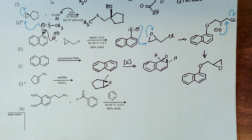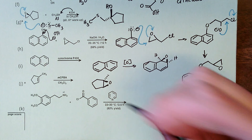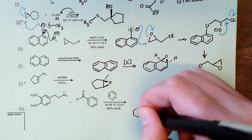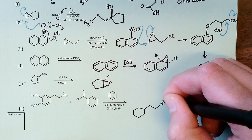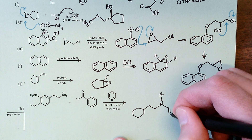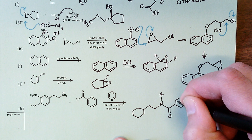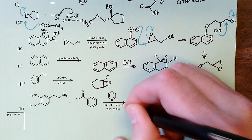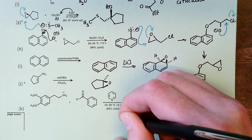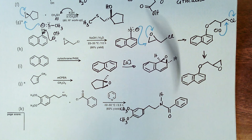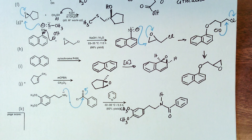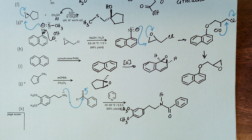Part k: a primary amine plus an acid chloride generates the amide in 82% yield. In the mechanism: the nitrogen atom attacks the electrophilic carbonyl to form a tetrahedral intermediate; a proton transfer event occurs; collapse of the tetrahedral intermediate expels chloride ion; and pyridine then deprotonates the protonated amide, giving the neutral amide product plus an equivalent of pyridinium chloride.